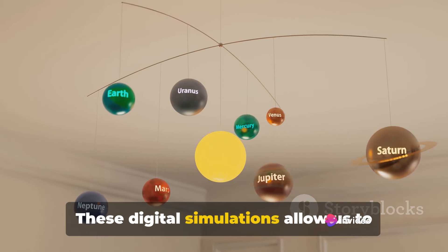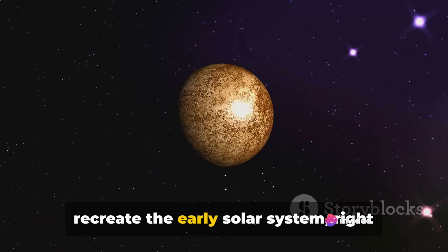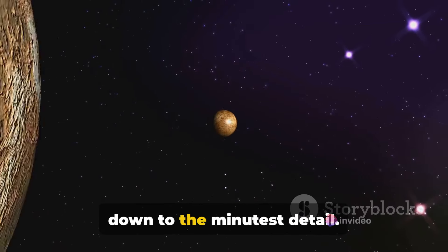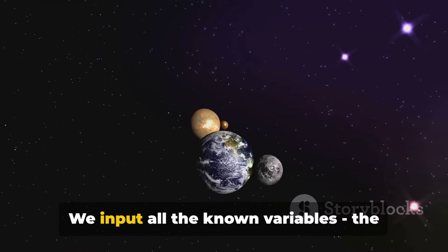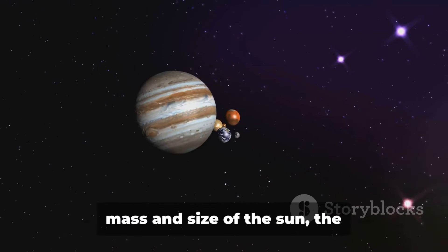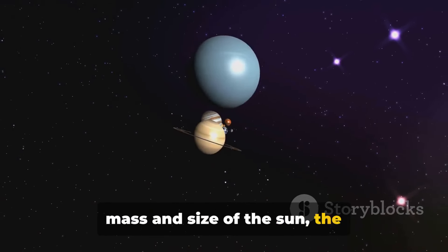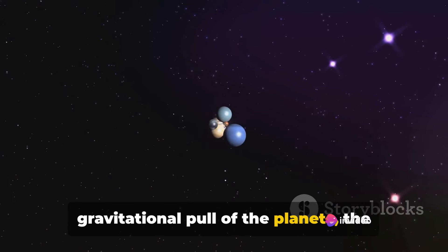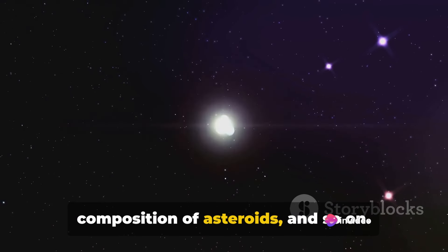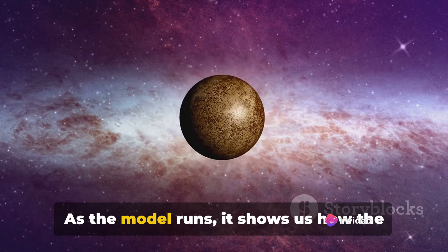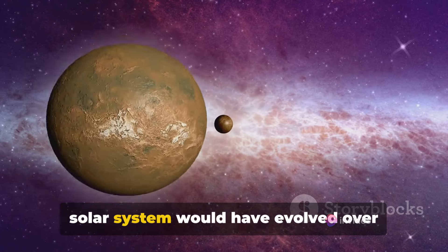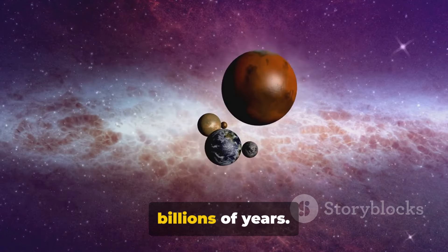These digital simulations allow us to recreate the early solar system, right down to the minutest detail. We input all the known variables—the mass and size of the sun, the gravitational pull of the planets, the composition of asteroids, and so on. As the model runs, it shows us how the solar system would have evolved over billions of years.